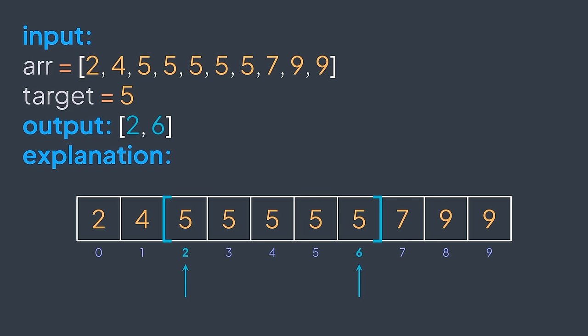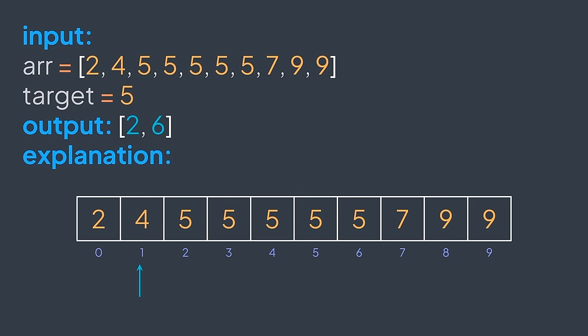Because the array is sorted, all elements with the same value will be adjacent to each other. So the first possible solution is to start traversing the array from the beginning, find the first position of target, and keep walking until finding the last position. In our example: 2, 4, then 5 — we found the first position. We keep walking: 5, 5, 5, 5 — this last one is the end position. We found it, return them.